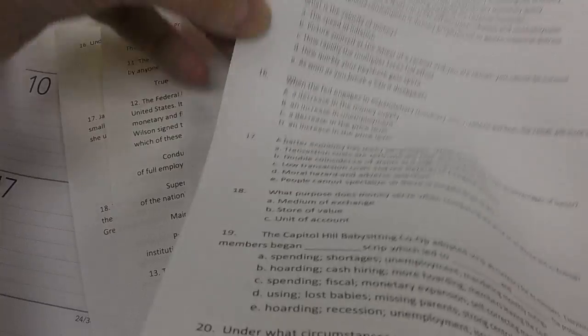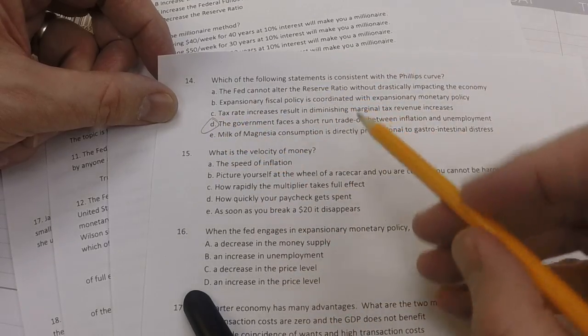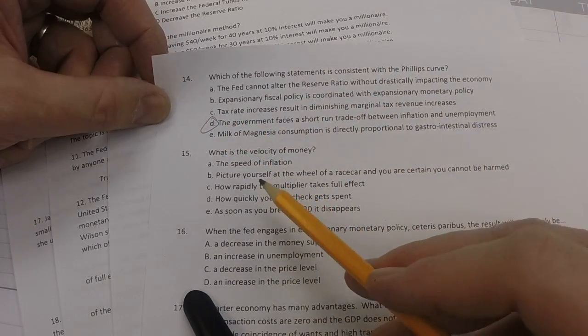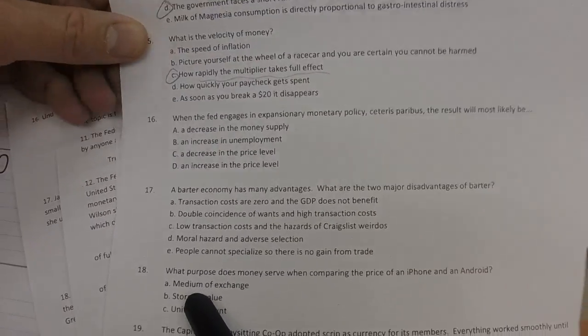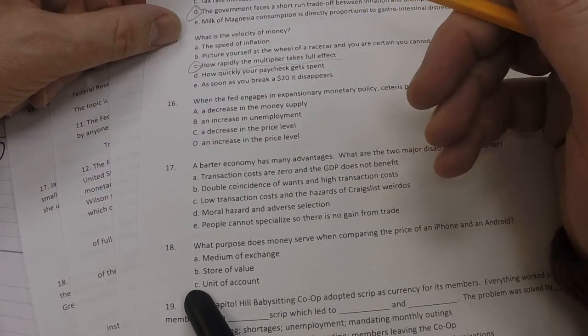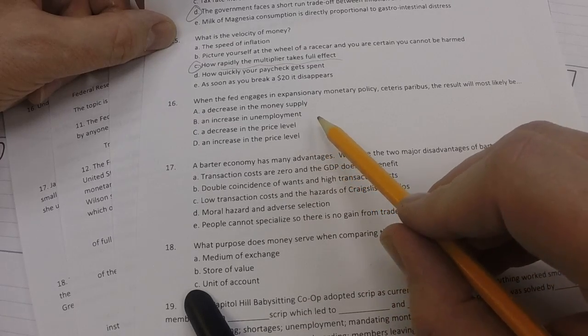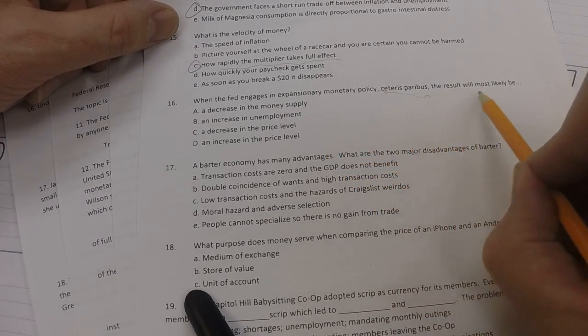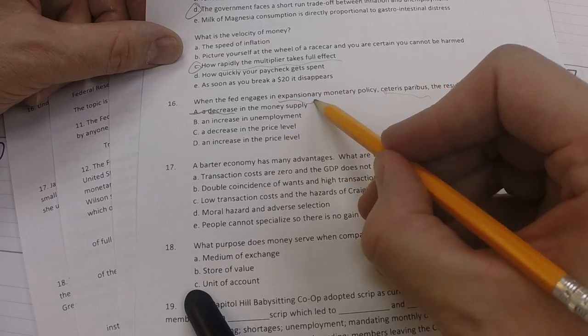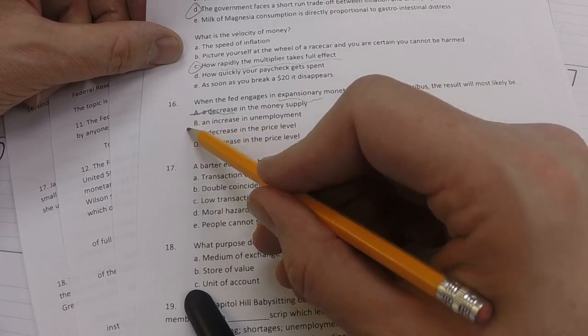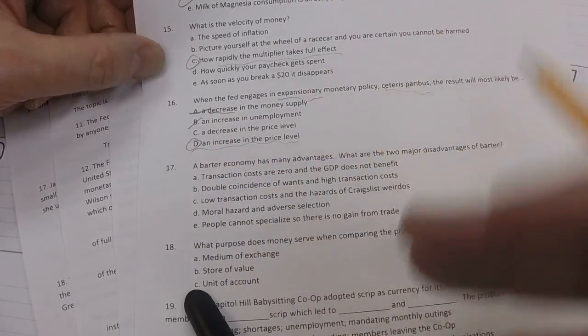Now, we go to 14. Which of the following statements is consistent with the Phillips curve? And remember, the Phillips curve states that the government faces a short-run trade-off between inflation and unemployment. Question 15. What's the velocity of money? It is how rapidly the multiplier takes full effect. Because how many times the, it's a measure of how quickly the money supply circulates through the economy. Question 16. When the Fed engages in expansionary monetary policy, all things being equal, the result will most likely be an increase. Okay. So, it's not this one because it's an increase in the money supply, expansionary monetary policy. There will be an increase in unemployment. It's a decrease in unemployment. The price level will increase. Yeah, that's a downside to that, like the Phillips curve set. So, the answer is D for 16.